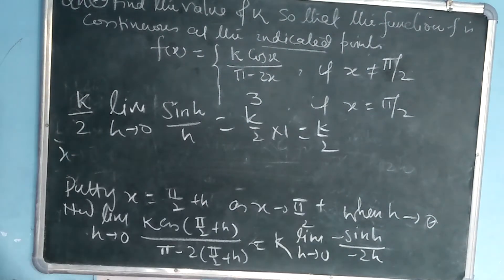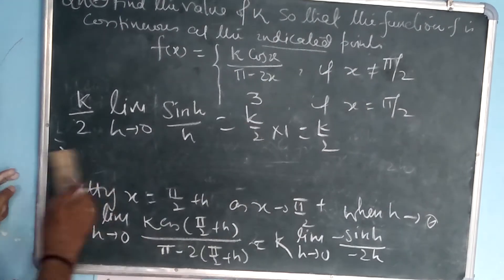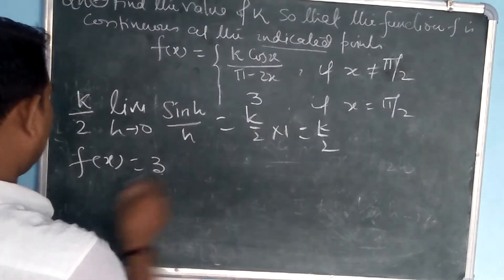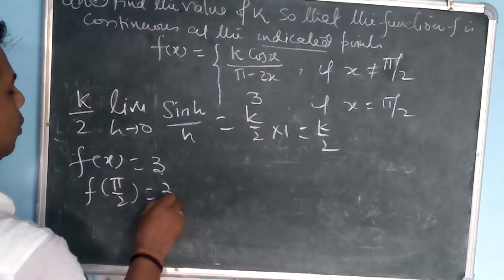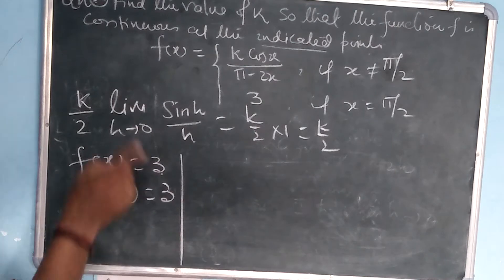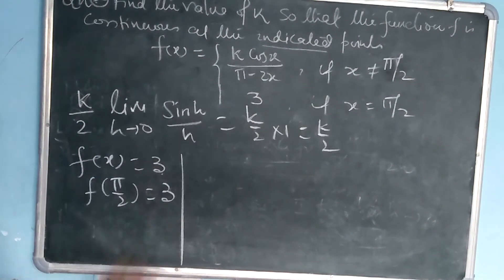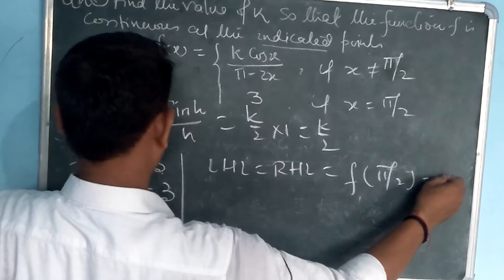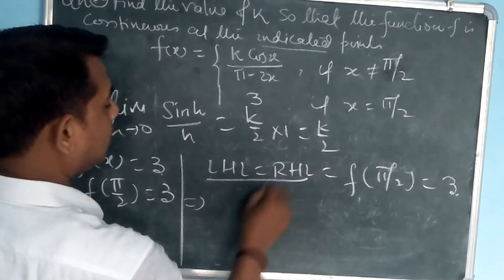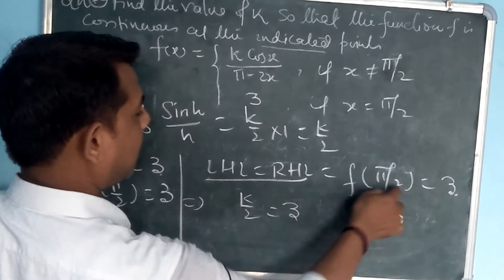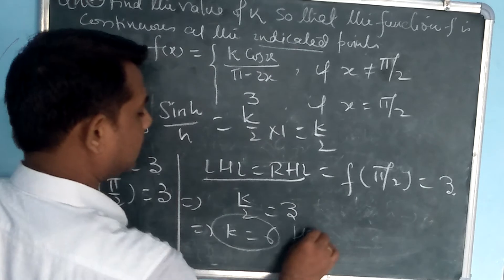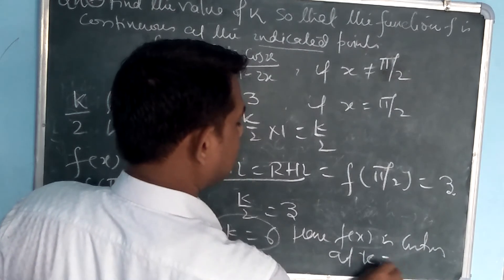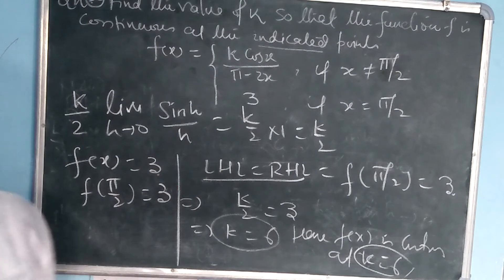Now we check the value at x = π/2: f(π/2) = 3. For continuity, we need LHL = RHL = f(π/2). We got LHL = RHL = k/2, and f(π/2) = 3. So k/2 = 3, which gives k = 6. Hence f(x) is continuous at x = π/2 when k = 6.